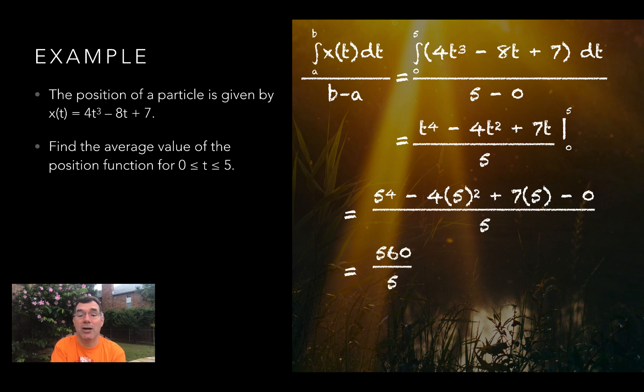Evaluating that, I get 560 over 5, which simplifies to 112. So the average position of the particle over that time interval is 112. Sometimes it might be higher, sometimes it might be lower than that, but the average position of the particle is 112.